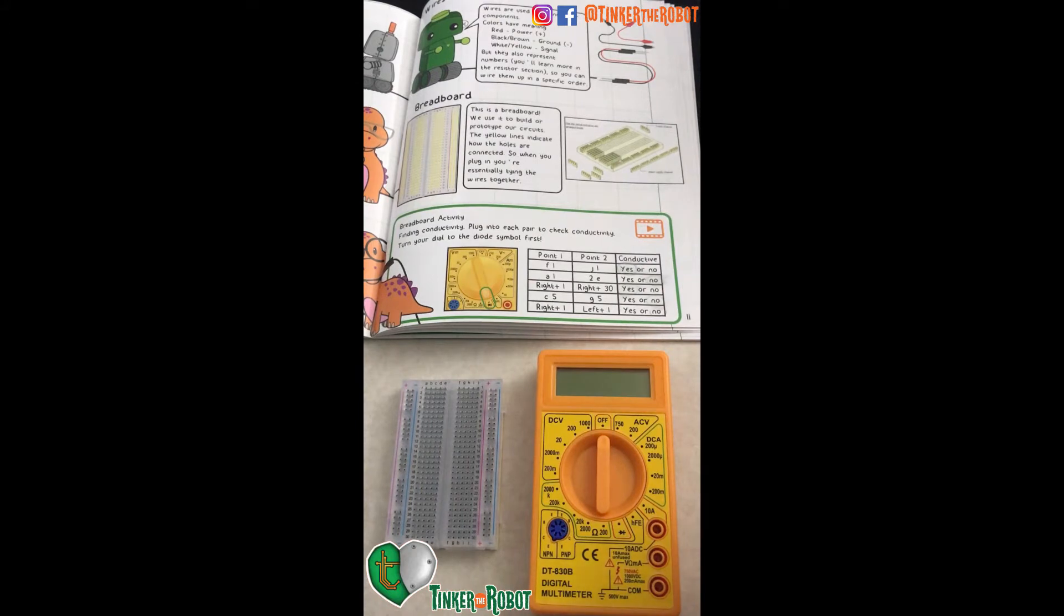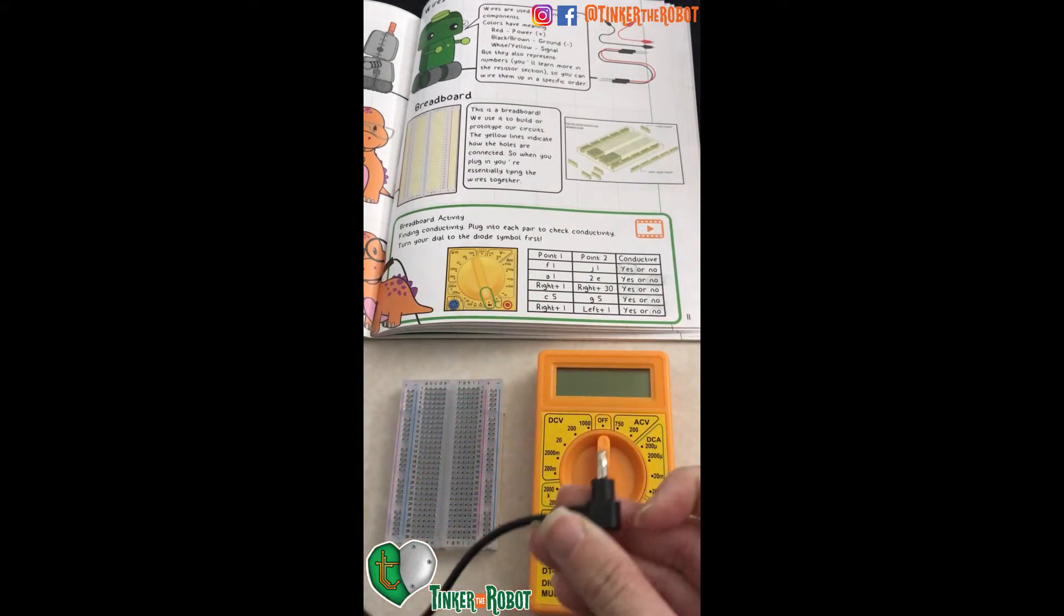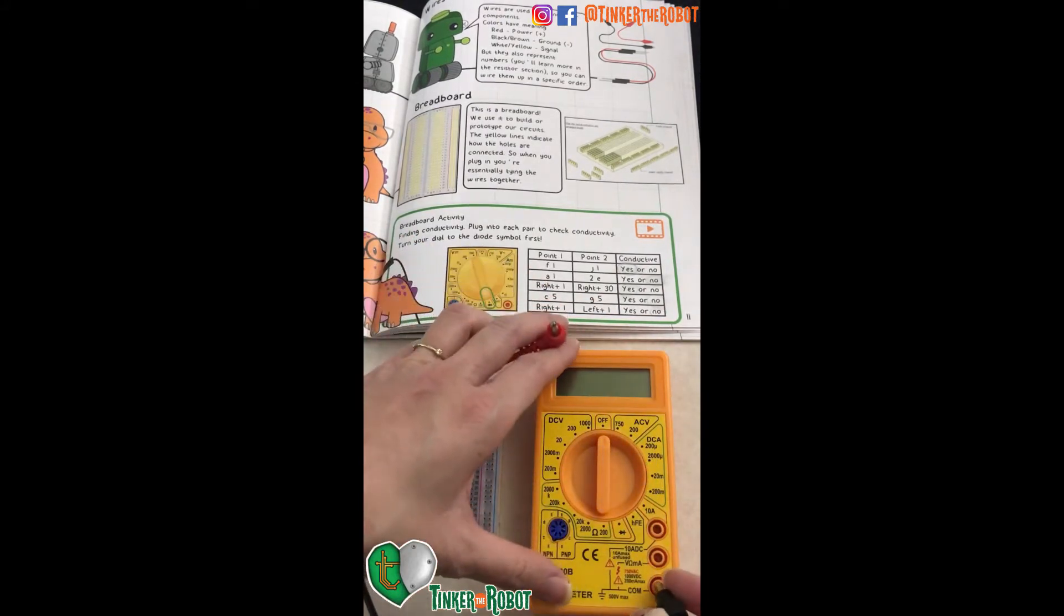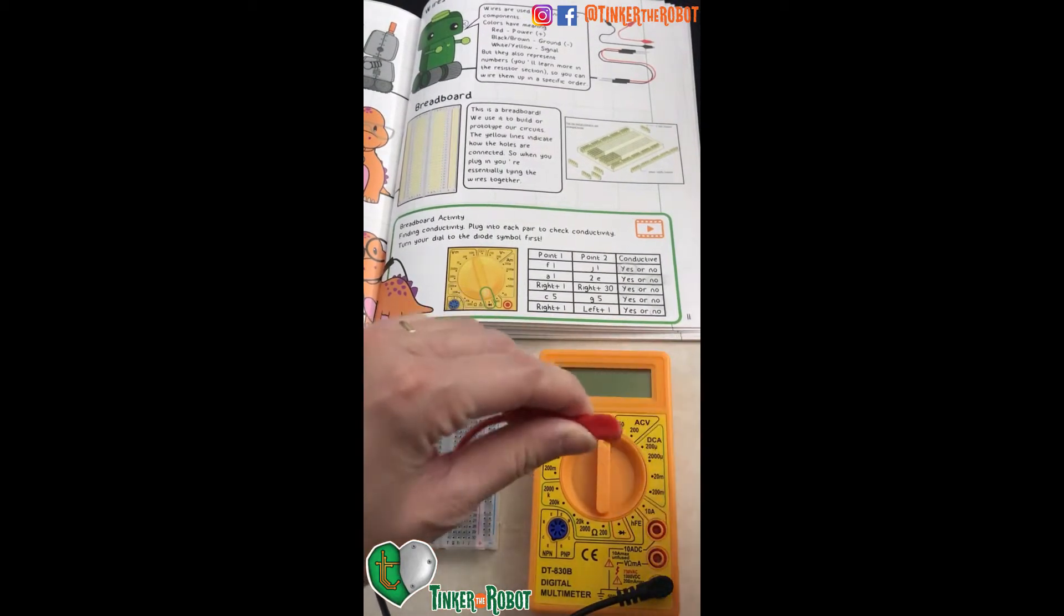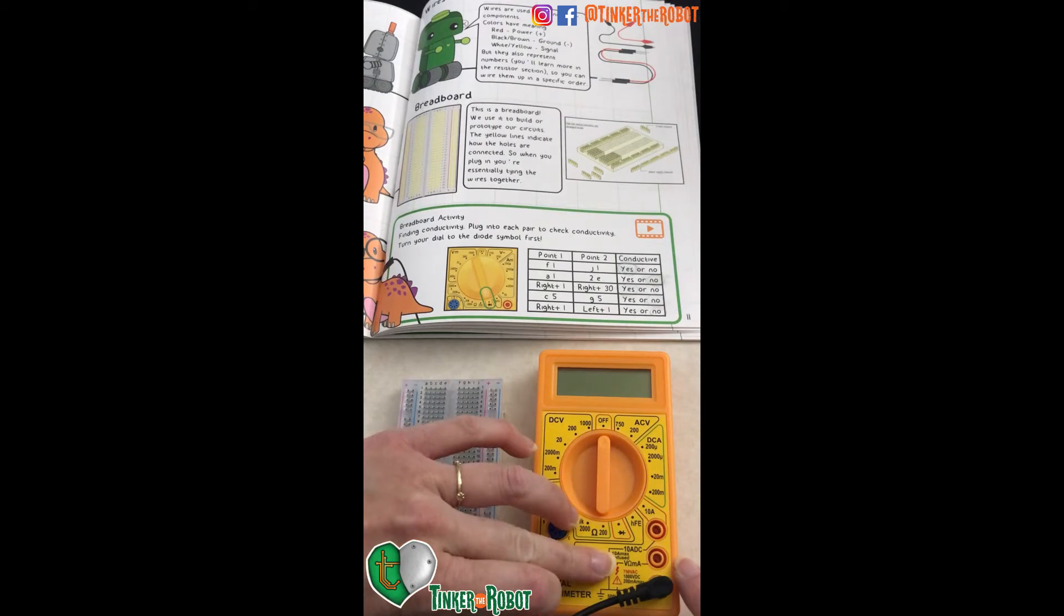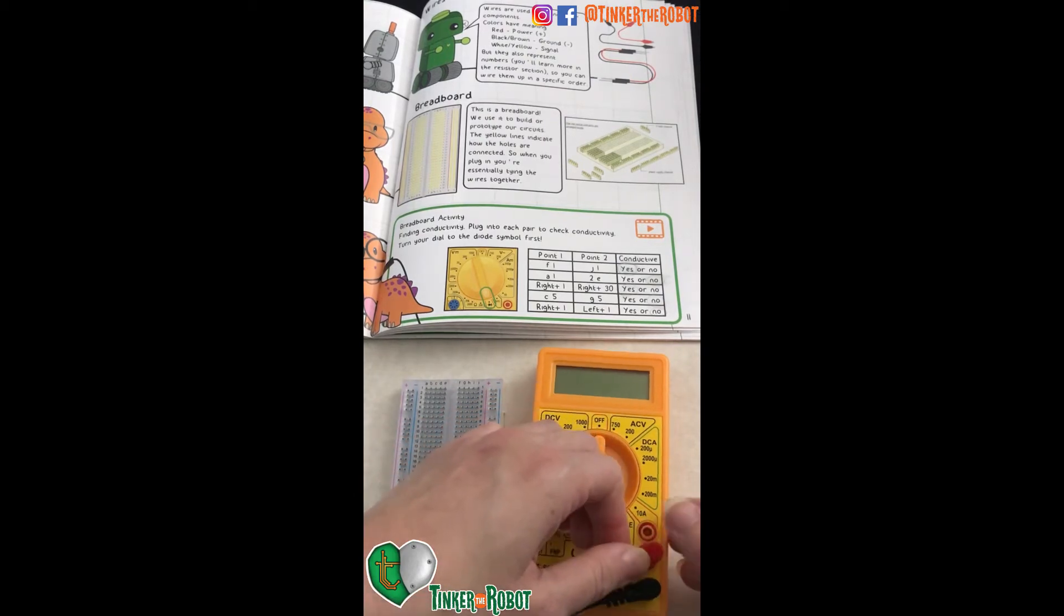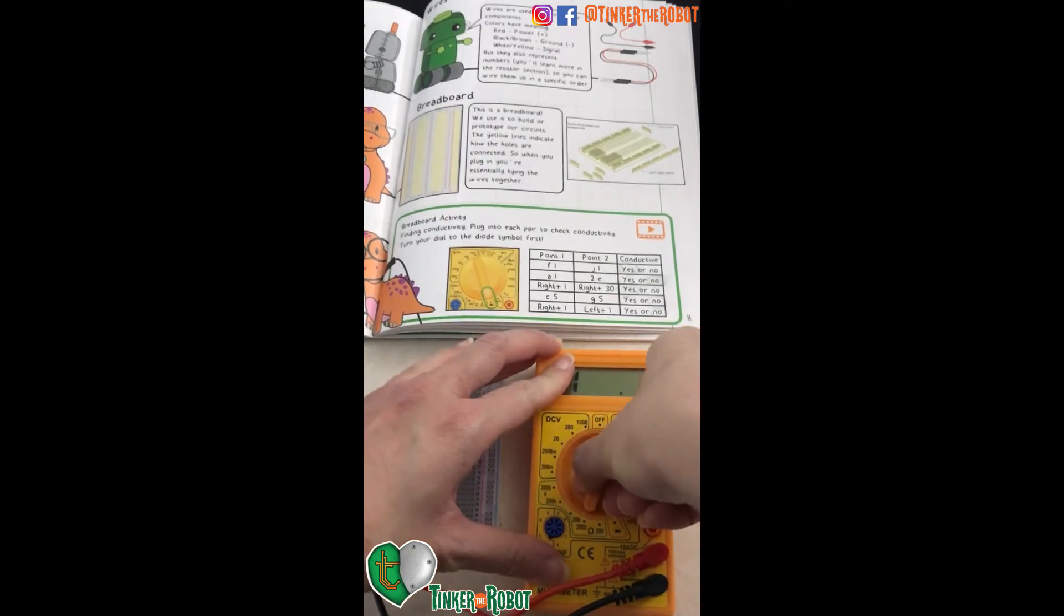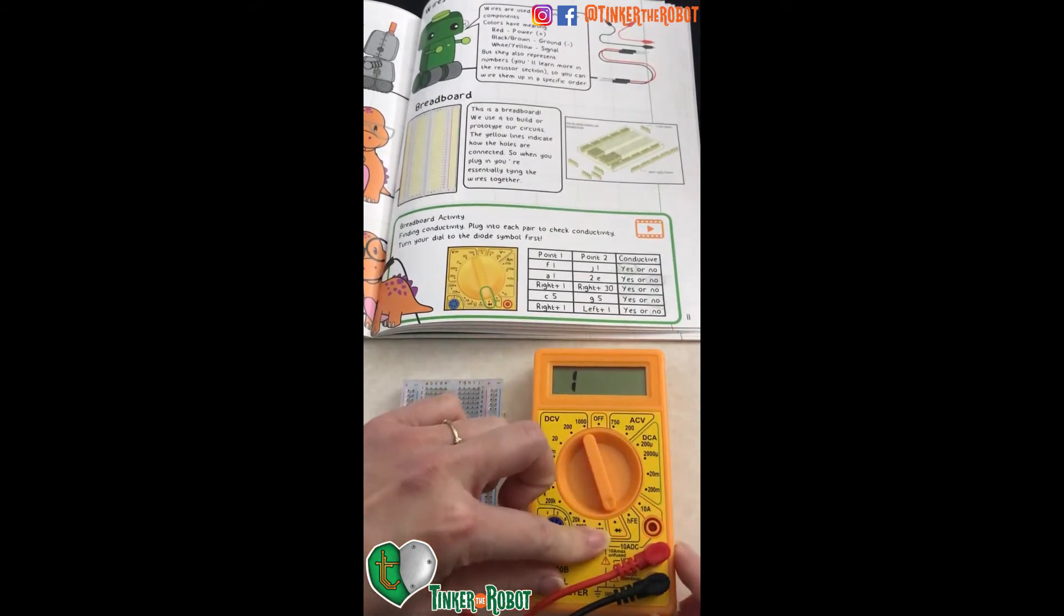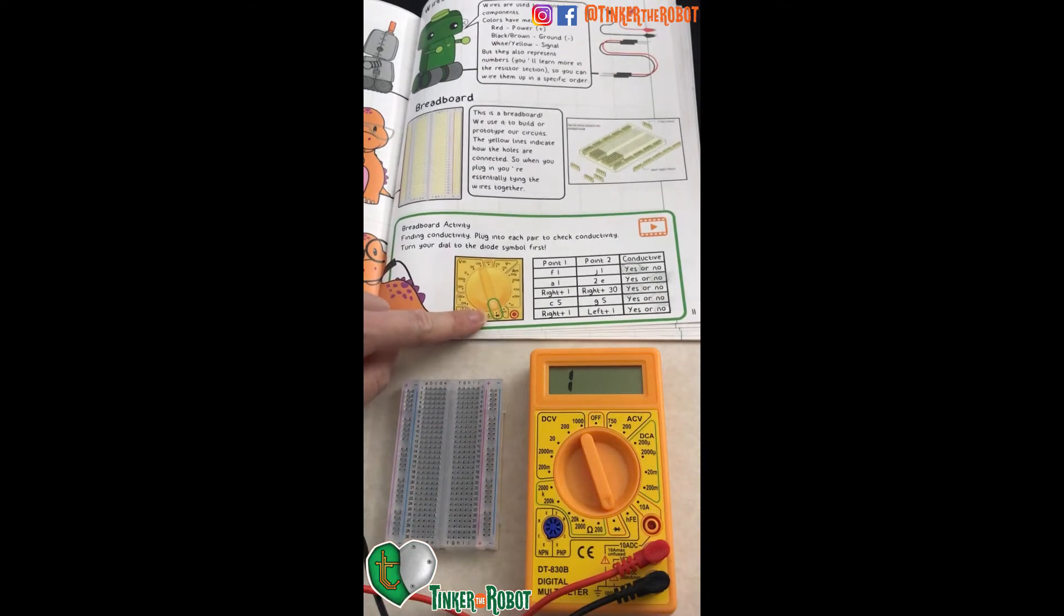So let's set up our multimeter first. Take your black probe and plug it into COM. Take your red probe and plug it into the one with V, ohm, and MA from milliamp. Then turn it all the way down to the diode symbol right there as indicated in your book.